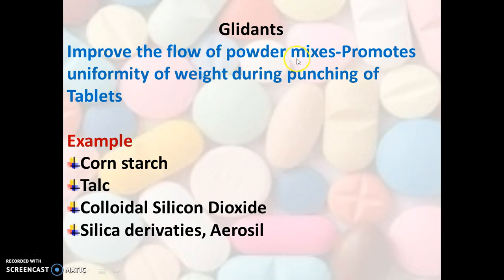Examples of lubricants are magnesium stearate, stearic acid, and talc. Next are glidants, which improve the flow property of the powder mix and are therefore very important for the weight uniformity of a tablet. Examples are corn starch, talc, colloidal silicon dioxide, and silica derivatives, of which an example is Aerosil.